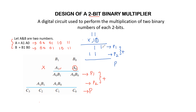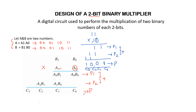In the LSB position, there is only a single bit, so we take it directly as 1. Then 1 plus 1 gives sum 0 and carry 1. Next, 1 plus 1 again gives sum 0 and carry 1. So the final product value is obtained and we label the bits as C0, C1, C2, and C3.